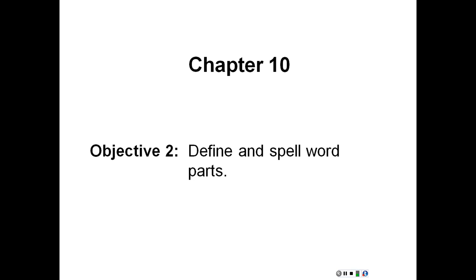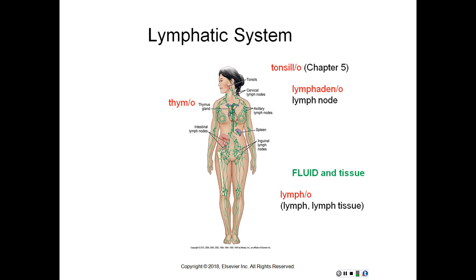Plasmo means plasma. Spleno means spleen. Thymo means thymus gland. Then we have two that mean valve: valvo and valvulo. And ventriculo means ventricle. Here is the lymphatic system.